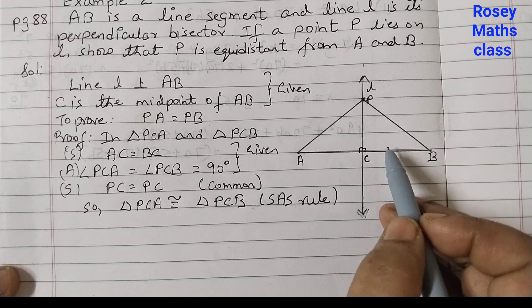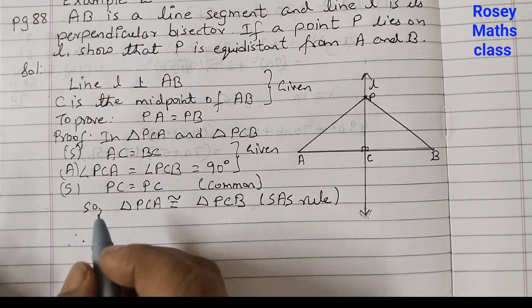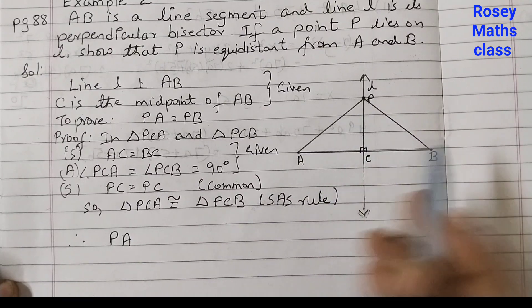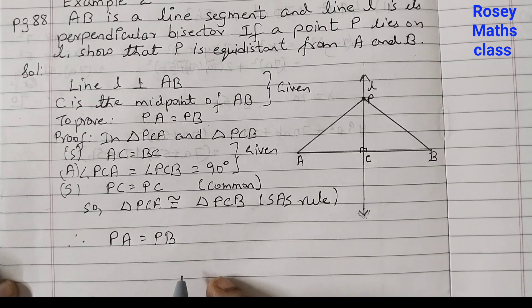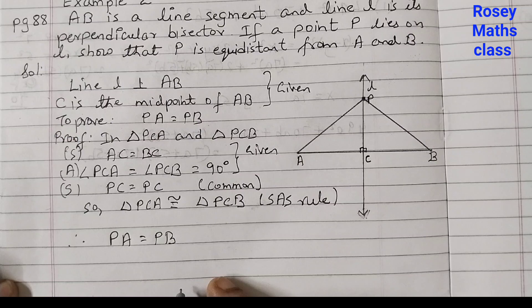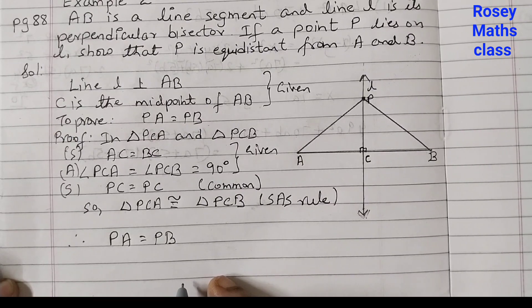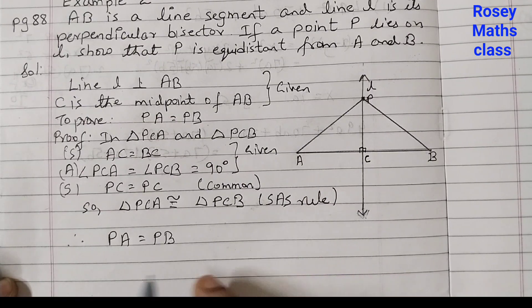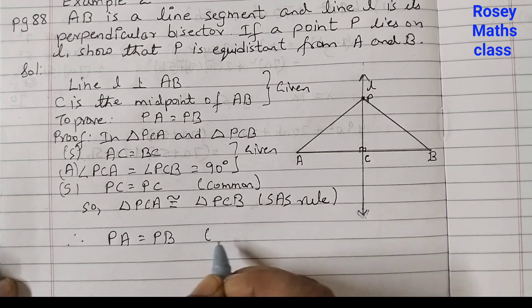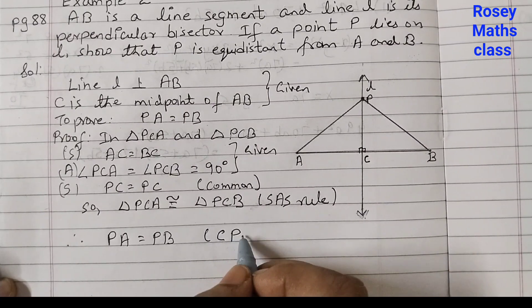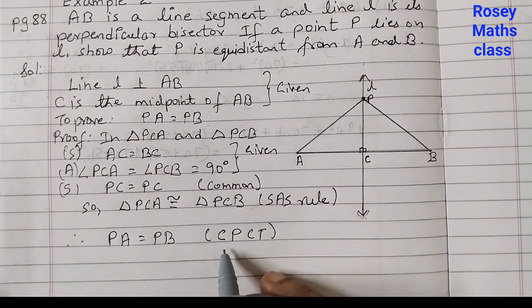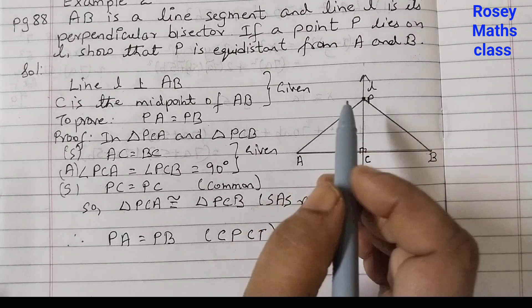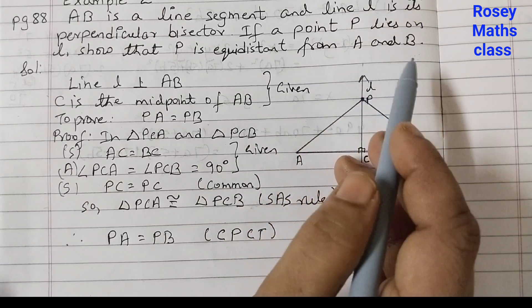Now if these two triangles are congruent therefore we can say that PA is equal to PB because they are corresponding sides of congruent triangles. So we know that when two triangles are congruent then the corresponding sides and corresponding angles are always of equal measure. So the reason you would write is CPCT. This is the short form of corresponding parts of congruent triangles. Therefore PA is equal to PB hence we have proved that P is equidistance from A and B.